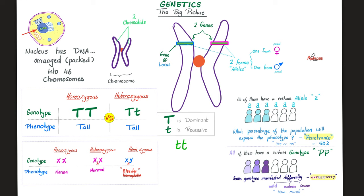Next: penetrance versus expressivity. Penetrance — what does that mean? Look at these six individuals; all of them have a certain allele, let's call it A. However, half of them are blue in color and the other half are not. So what percentage of the population expressed the phenotype — i.e., the physical appearance? The answer is 50%. This 50% is called penetrance, which means allele A was able to penetrate into half of the population.